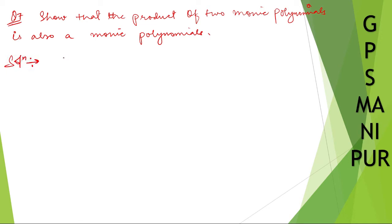We need to show this. So let us determine something. Let x to the power n and x to the power m be two monic polynomials, where x is a variable